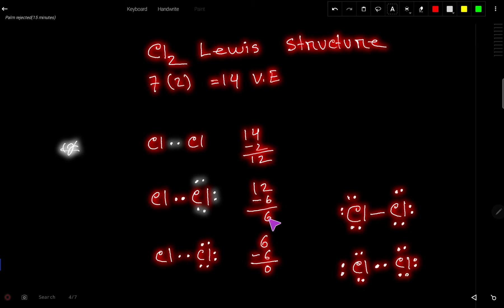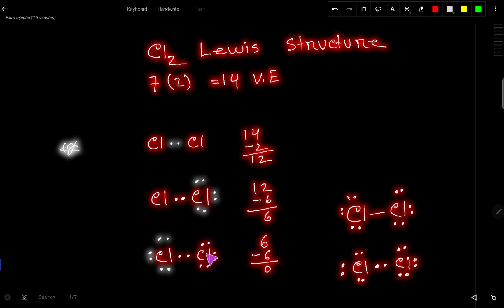These remaining six electrons will be used to satisfy the octet for the second chlorine atom. Now this chlorine also has two, four, six, eight electrons.